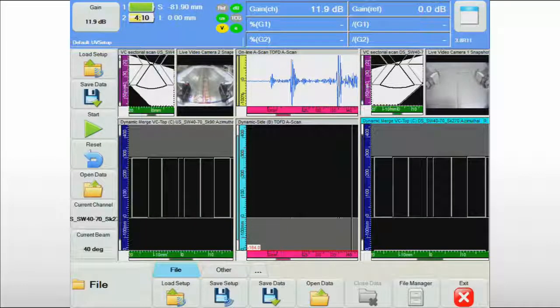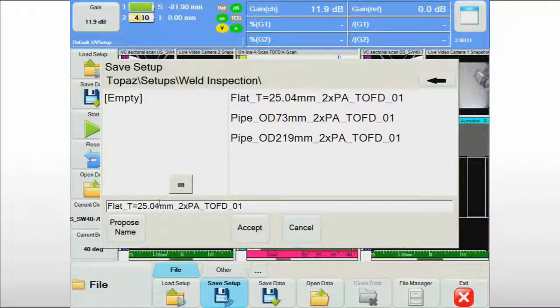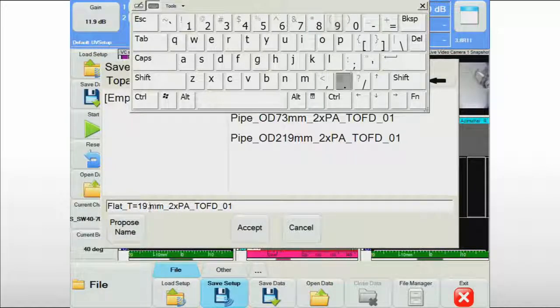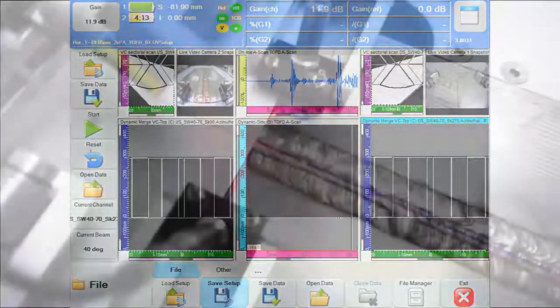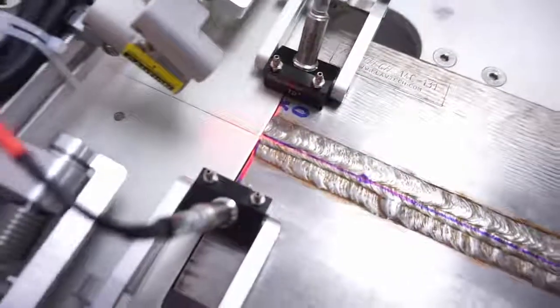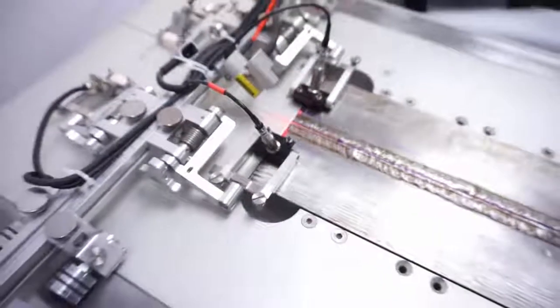To ensure an efficient inspection workflow on site, Topaz 16 can prepare and save setup files for various components in advance. During the job, the appropriate setup file can be simply selected from a list. In preparation of the inspection, the scanner is placed with the probes symmetrically on either side of the weld centerline. The laser guide can be very helpful in facilitating the installation.